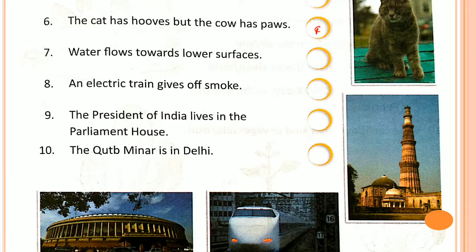Number 7: Water flows towards the lower surface. Is it true or false? Yes, it is TRUE. Water flows towards the lower surface because of gravity.